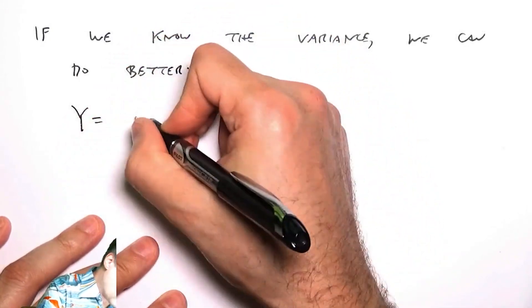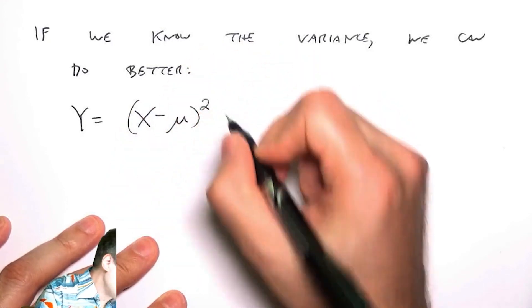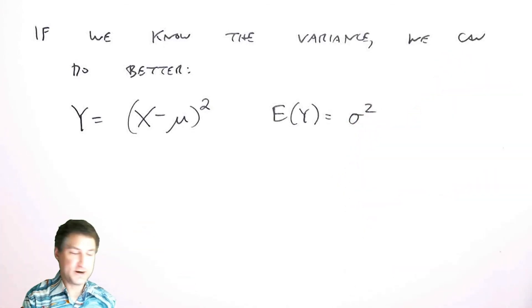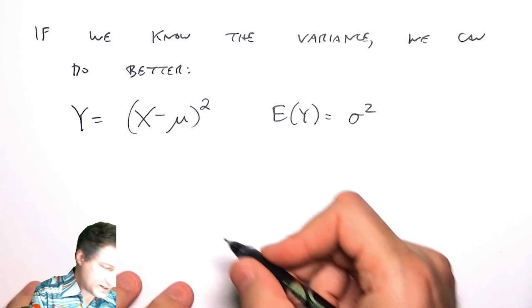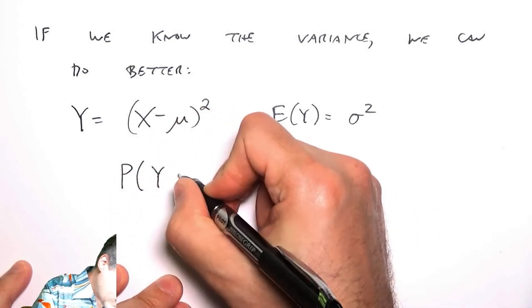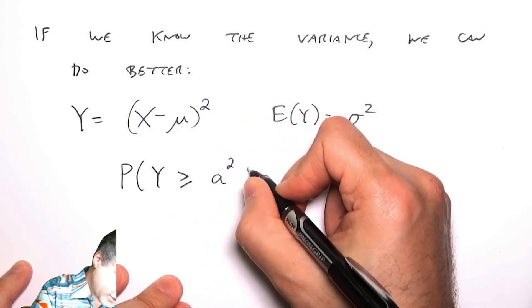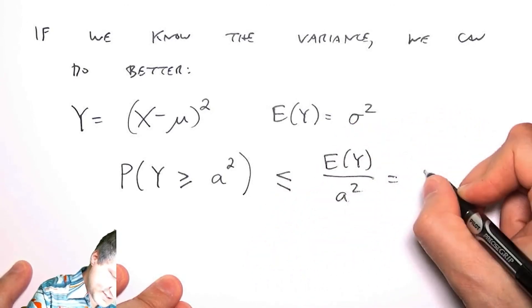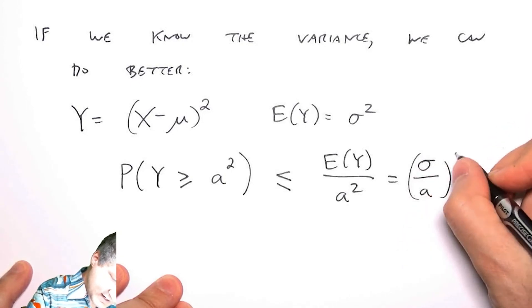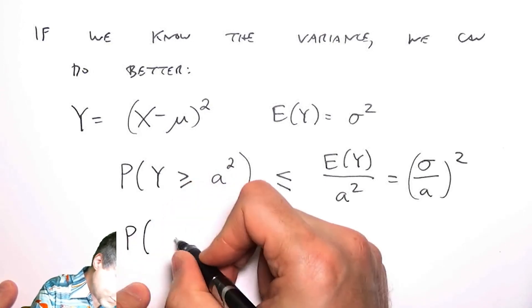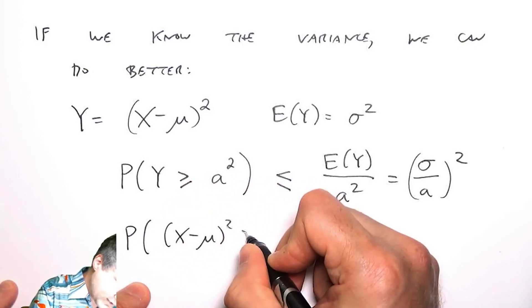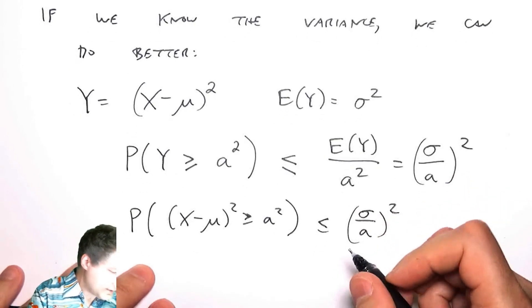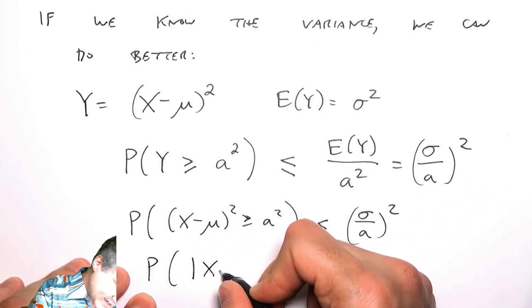For example, let's let Y equal (X - μ)². This new random variable, so the expected value of Y is σ², that's how we defined the variance in the first place. And now let's apply Markov to this random variable Y. Markov says the probability that Y is greater than or equal to some number, I'm going to call it a², is less than or equal to the expected value of Y over that number, which in this case is σ² over a².